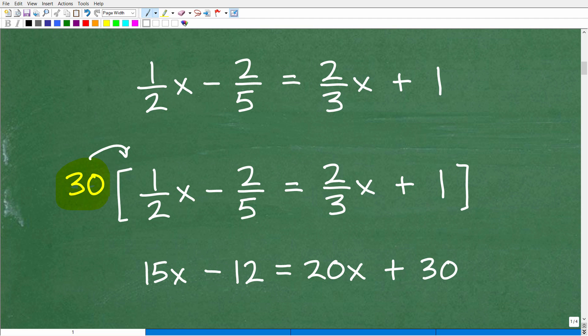You're going to take that 30. You're going to multiply it by 1/2 x. You're going to multiply it by this negative 2/5. You're going to multiply it by 2/3 x. And you're going to multiply it by 1. So that's what we're going to want to do here.